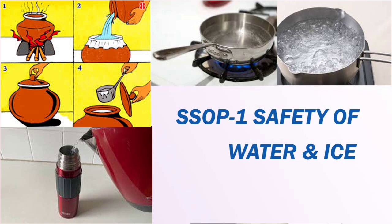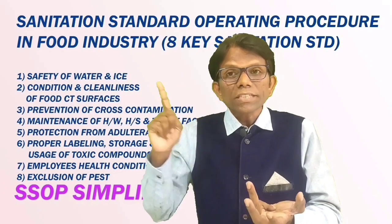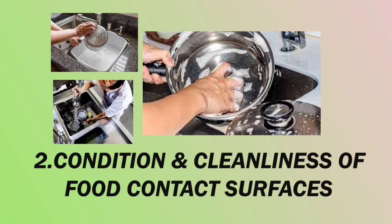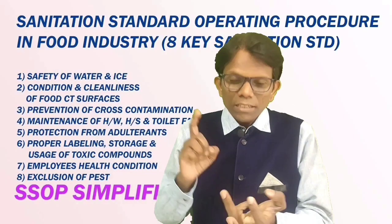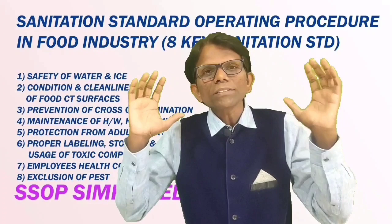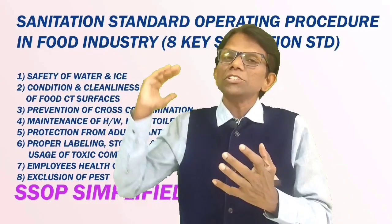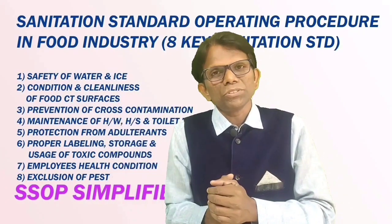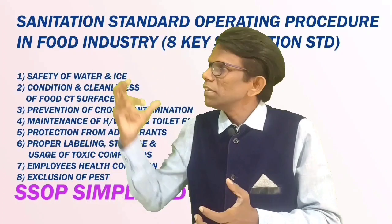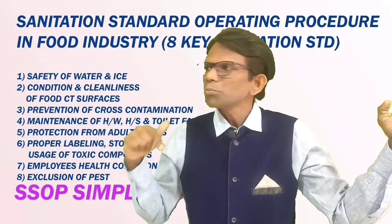SSOP second step is condition and cleanliness of food contact surfaces. The mother will wash the bowl properly, and after washing, she will sanitize the bowl in warm water. The mother will also choose a stainless steel bowl — non-corrosive, non-toxic material. In the food industry, we also use food contact surfaces mostly made of stainless steel grades 306, 308, 311, 316, and similar. So the mother feeding her baby in a sanitized stainless steel bowl represents the second SSOP component.